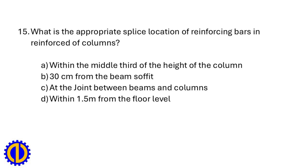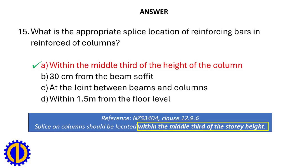What is the appropriate splice location of reinforcing bars in reinforced columns? a. Within the middle third of the height of the column, b. 30 cm from the beam soffit, c. At the joint between beams and columns, d. Within 1.5 m from the floor level. Answer: a. Within the middle third of the height of the column. Reference: New Zealand Standard 3404 — splices on columns should be located within the middle third of the story height.